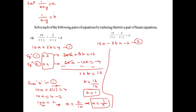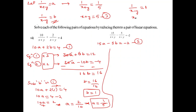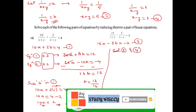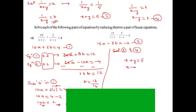Substituting back: 1 by x plus y equals 1 by 5, so x plus y equals 5 (equation 3). And 1 by x minus y equals B equals 1, so x minus y equals 1 (equation 4). Adding equations 3 and 4: 2x equals 6, so x equals 3. Substituting: 3 minus y equals 1, giving y equals 2. The solution is x equals 3 and y equals 2.